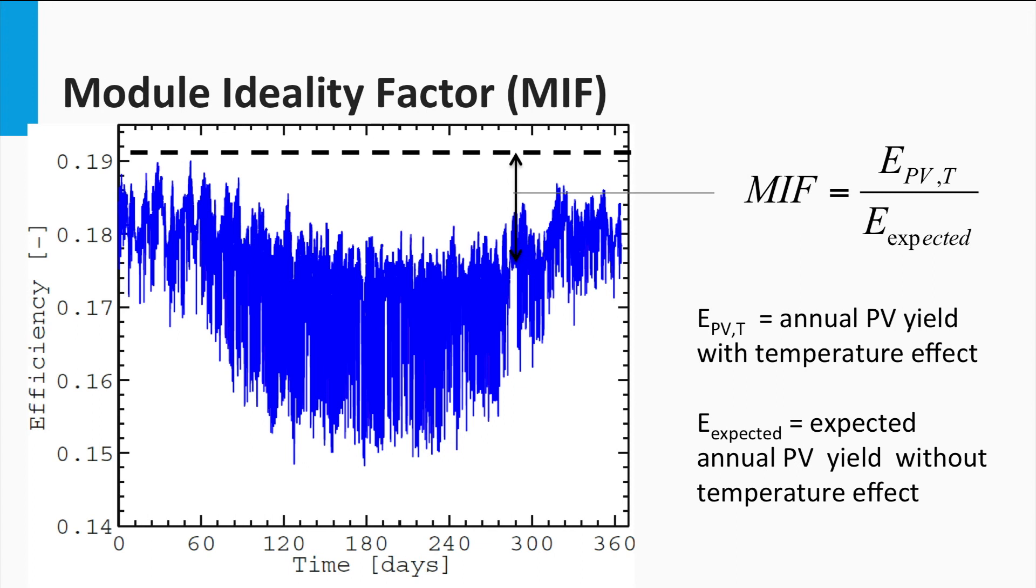This is nothing but the ratio of the expected PV yield actually available, taking into account the temperature effects. If the module ideality factor is 80%, that means that the module has lost 20% of its annual energy yield due to temperature effects. If the module ideality factor is 100%, that means the module is immune to temperature changes.